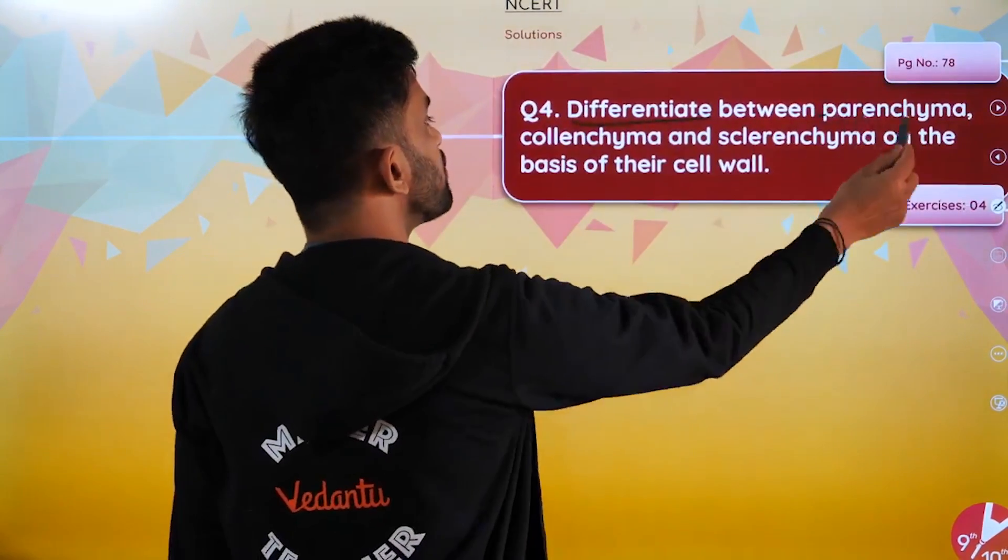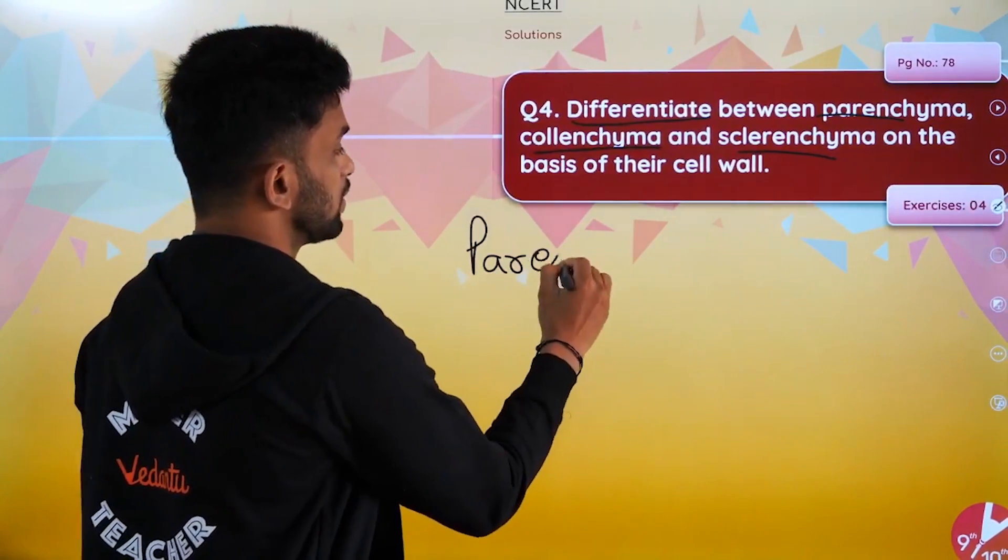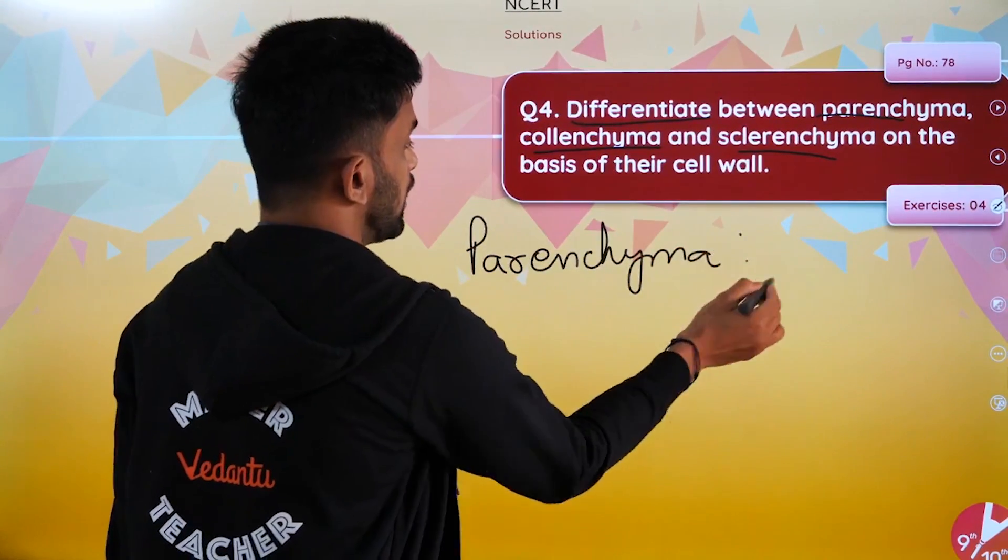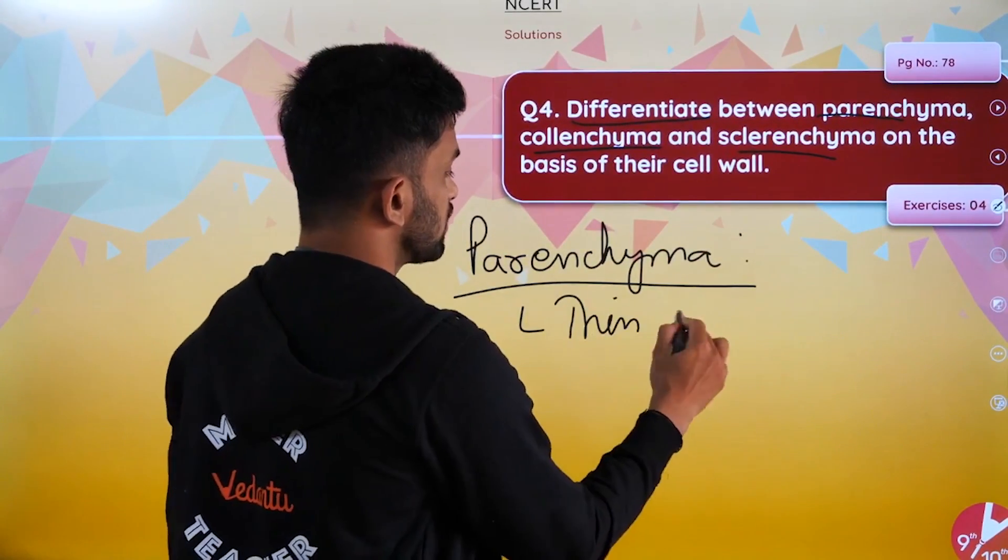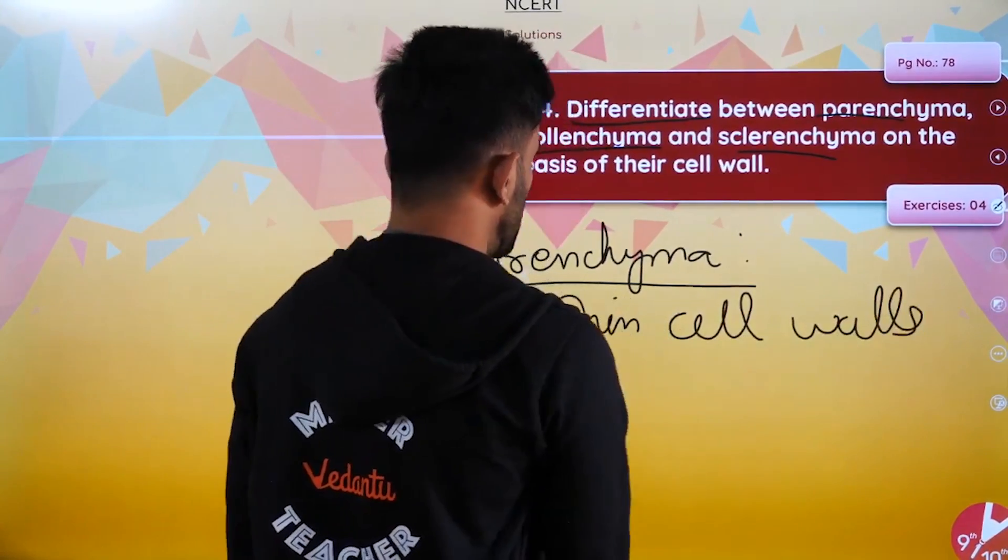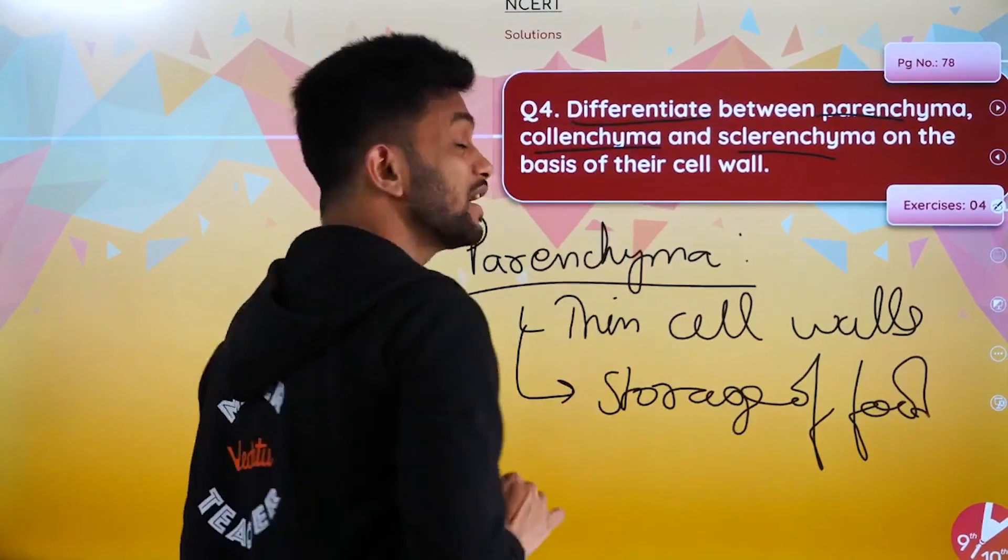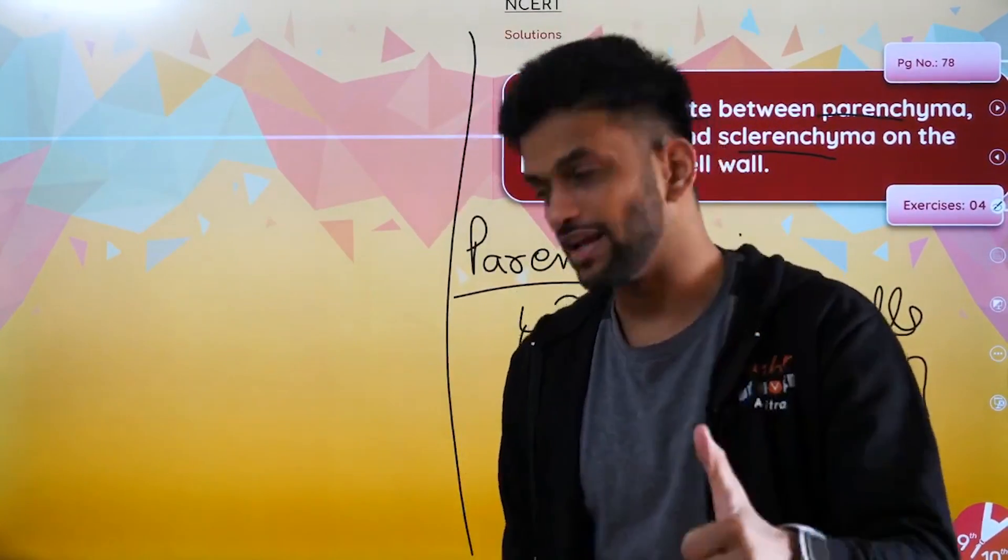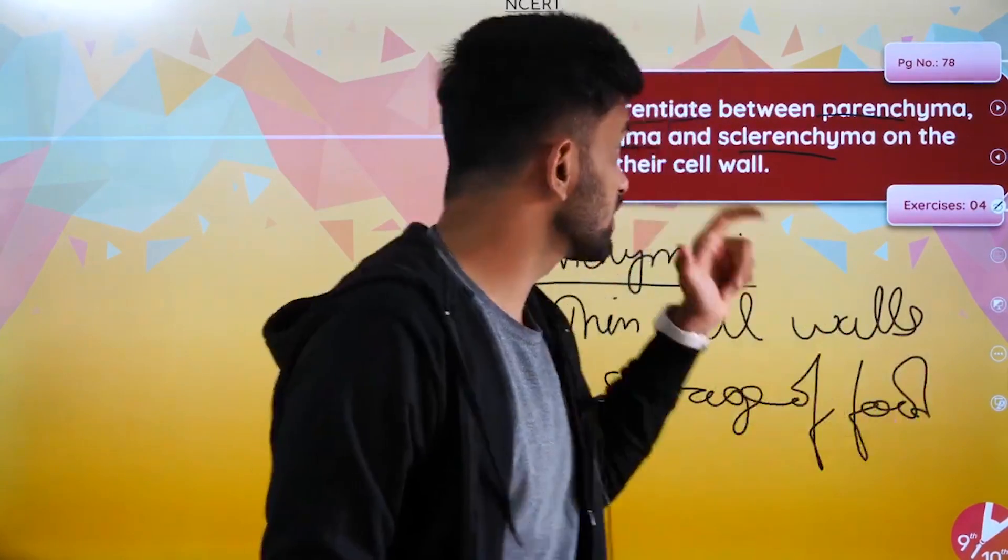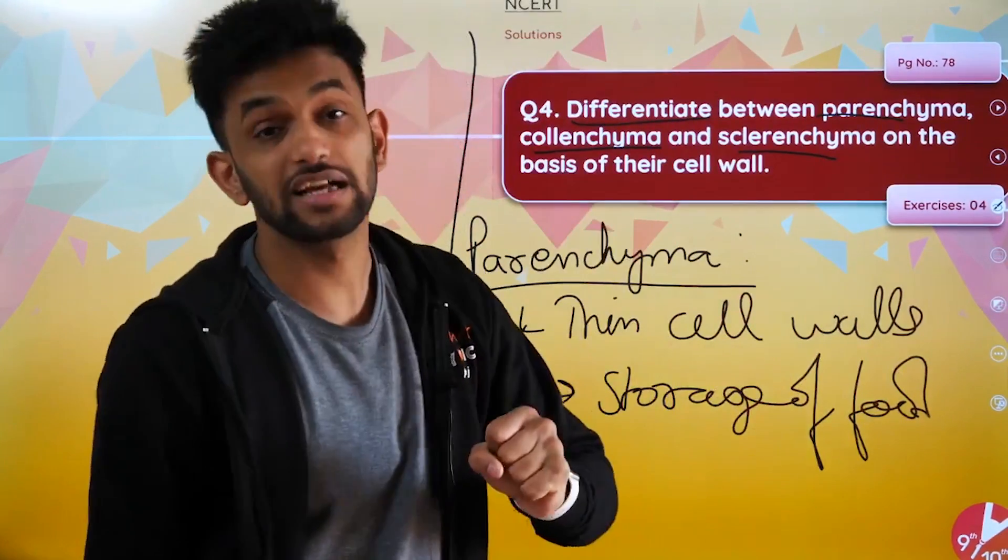Next question: Differentiate between parenchyma, collenchyma, and sclerenchyma. Parenchyma has thin cell walls and helps in storage of food. Collenchyma has cell walls which are thickened at corners and provides flexibility.